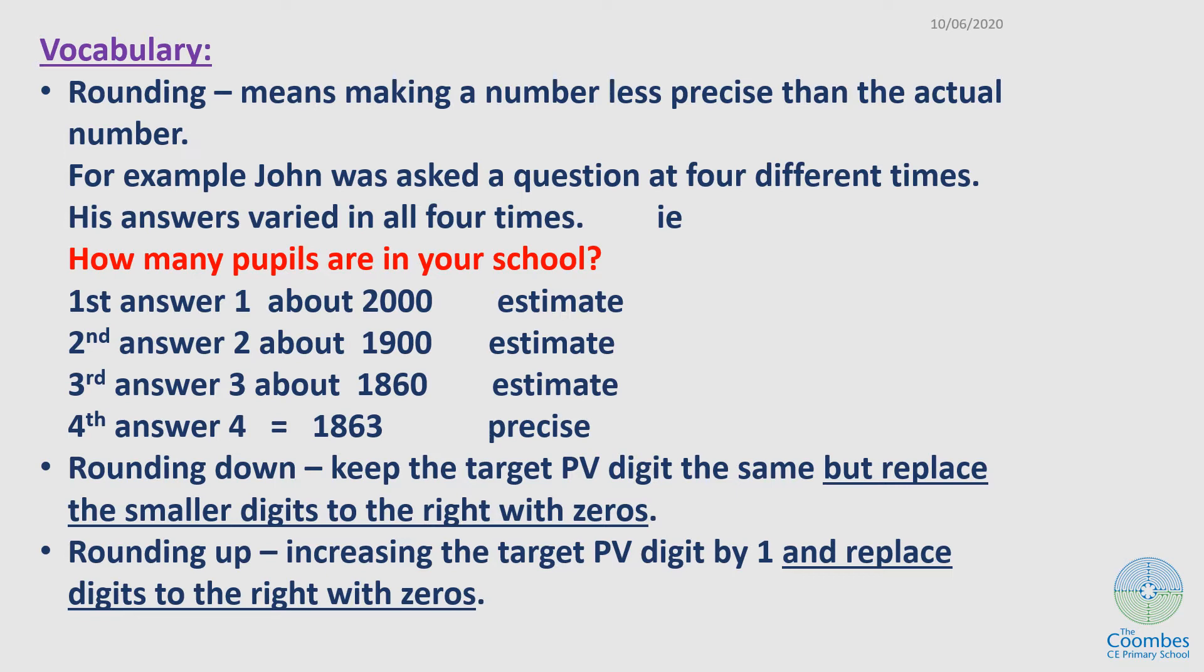There are a few vocabulary terms I want you to take note of. First, rounding. Rounding just means making a number less precise than the actual number. For example, John was asked a question four different times and in all four his answers varied. The question was: How many pupils are in your school?